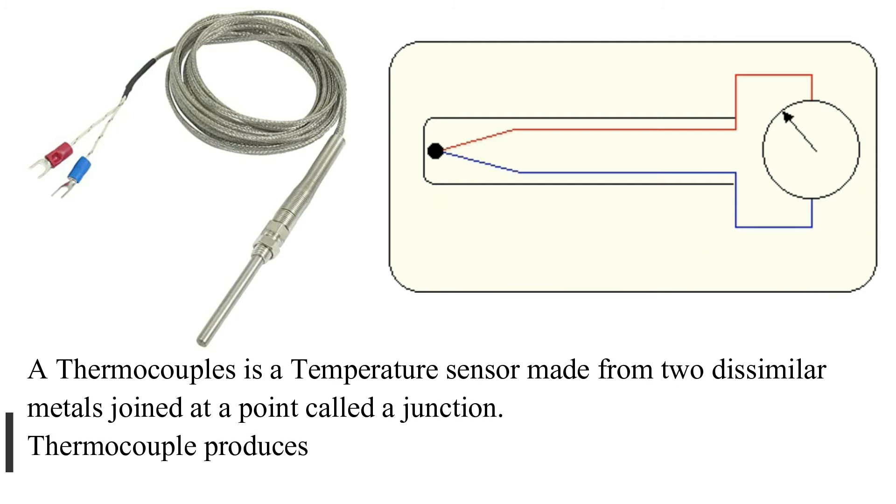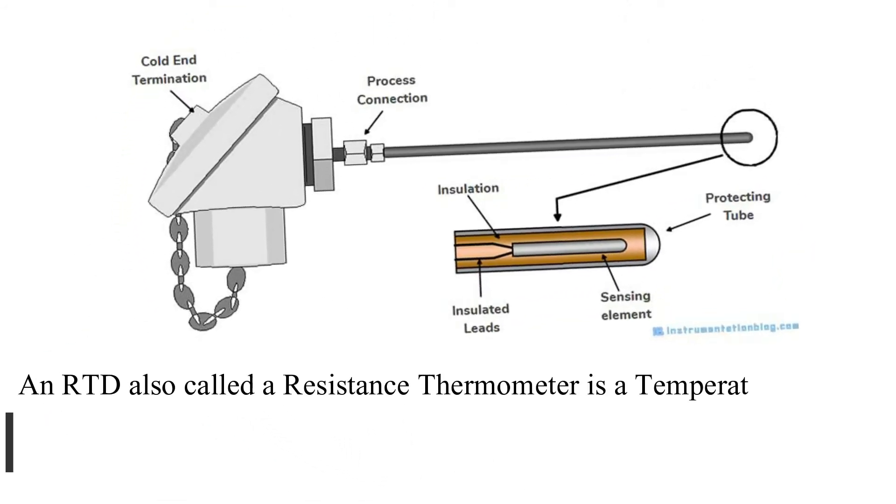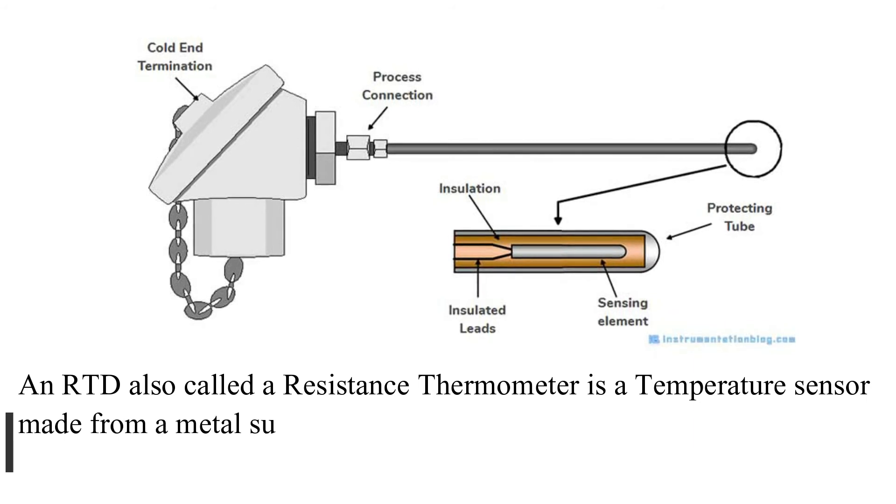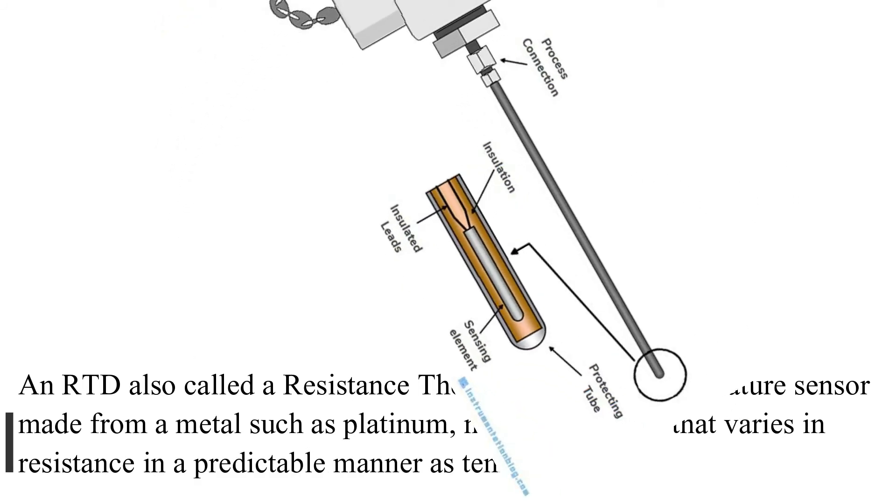Thermocouple produces a small voltage that is temperature dependent. An RTD, also called a resistance thermometer, is a temperature sensor made from a metal such as platinum, nickel, or copper that varies in resistance in a predictable manner as temperature varies.